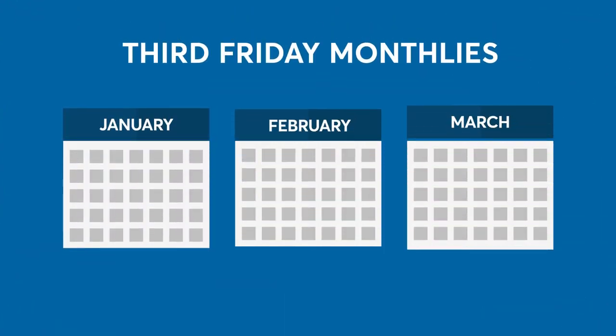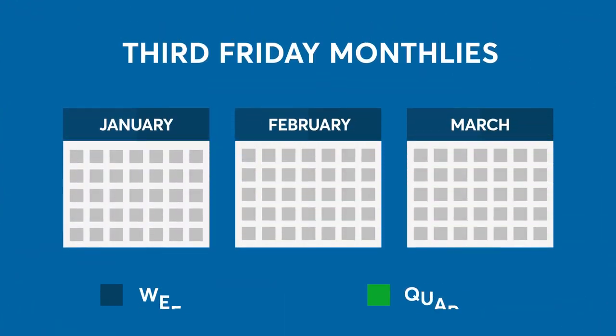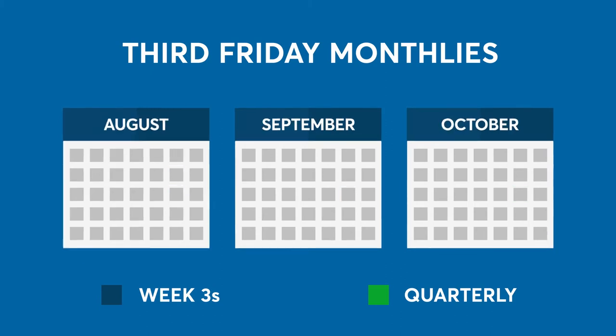Let's first look at the third Friday monthlies that will be listed. CME Group will list options on the third Friday of months that are not a quarterly option expiration. For example, at the beginning of January, the third Friday in January and February will be available, as well as the March quarterly. And in August, the third Friday monthlies will be available for August and October, as well as the September quarterly.